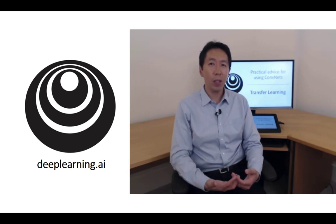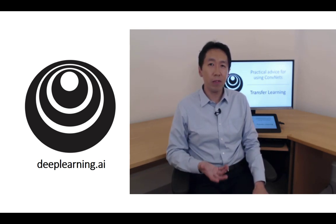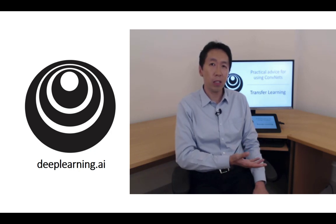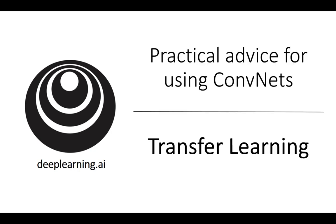Sometimes this training takes several weeks and might take many GPUs, and the fact that someone else has done this and gone through the painful hyperparameter search process means that you can often download open source weights that took someone else many weeks or months to figure out and use that as a very good initialization for your own neural network, and use transfer learning to transfer knowledge from some of these very large public datasets to your own problem. Let's take a deeper look at how to do this.